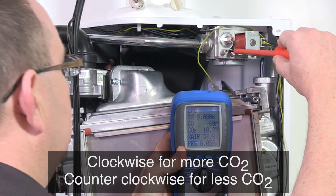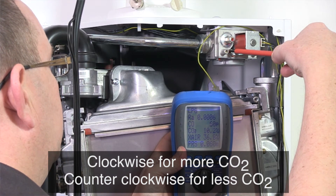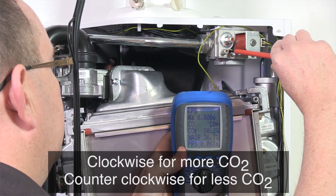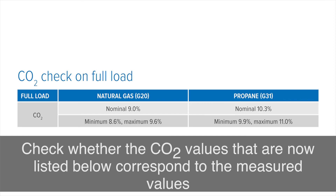Set the CO2 values using a 2mm allen key or a large flat bladed screwdriver on the throttle screw. Then turn clockwise for more CO2 or anti-clockwise for less. Then check whether the CO2 values now correspond with the measured value.